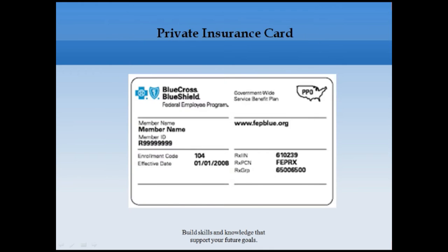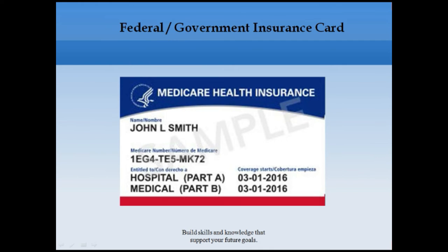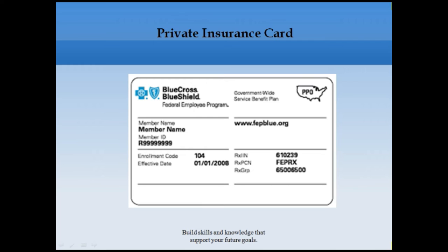There are two main types of insurance in the US. One is federal insurance, which is government insurance — like Medicare, Medicaid, and TRICARE. The other is commercial insurance, such as BCBS (Blue Cross Blue Shield), Humana, Cigna, and Molina. These are private or commercial insurance plans. All of this insurance information is submitted at the front office of the doctor's office.